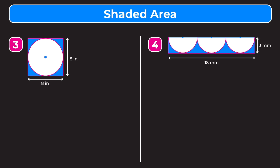In example three we have a square with a circle cut out. We do the same thing: find the area of the outer shape and subtract the area of the inner shape. Our outer shape is a square and our inner shape is a circle. To find the area of the square we square the side length.